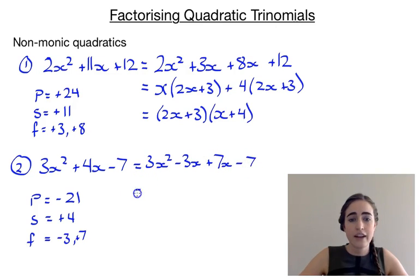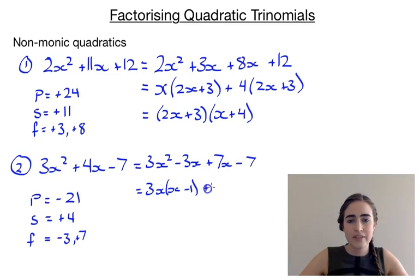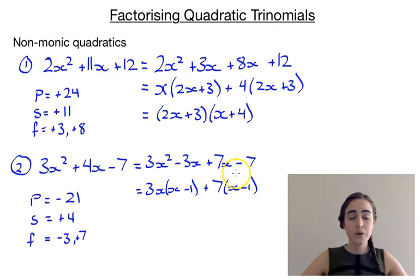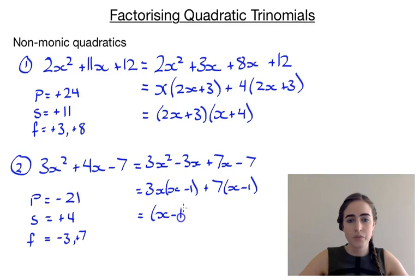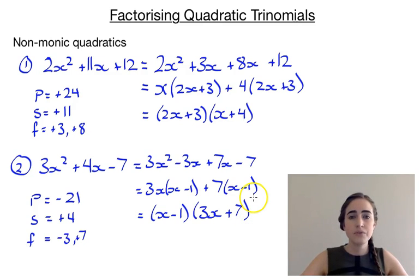Now we factorise by grouping. The first two terms have 3x in common, giving 3x(x minus 1). The second two terms have 7 in common, giving 7(x minus 1). We pull out the whole bracket as the common factor, giving us (x minus 1)(3x plus 7). So those are a few examples of how to factorise both monic and non-monic quadratic trinomials.